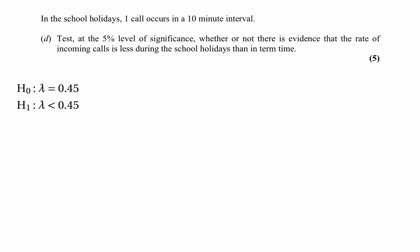The alternative hypothesis is that lambda is less than 0.45. This is a one-tailed test because we're interested in whether the rate of calls is lower during holidays, not simply different. As before, the hypotheses relate to a one-minute interval but our test statistic comes from a 10-minute interval. The expected number of calls in 10 minutes is 10 times 0.45, which is 4.5. So we have a random variable with the Poisson distribution with mean 4.5.